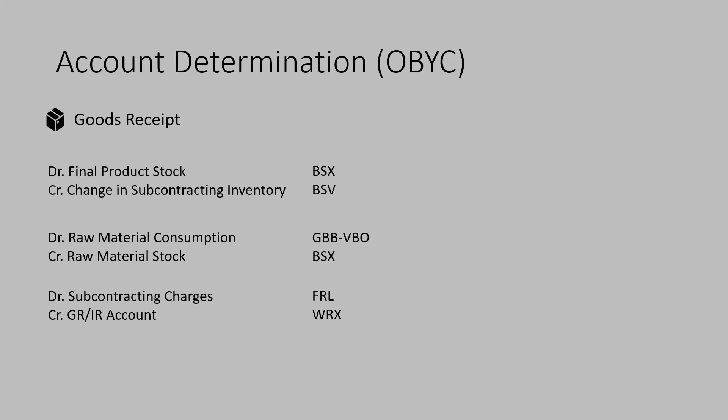Similarly for subcontracting charges and the GRIR account we need GL accounts entered in account keys FRL and WRX respectively. Many of these are the same as FIMM integration configurations, but we have a few additionals such as FRL for subcontracting charges and BSV for subcontracting inventory change. We also need special procurement type 30 configured for the plant in which we are going to perform subcontracting, so that the system will understand the material is being procured via subcontracting method.